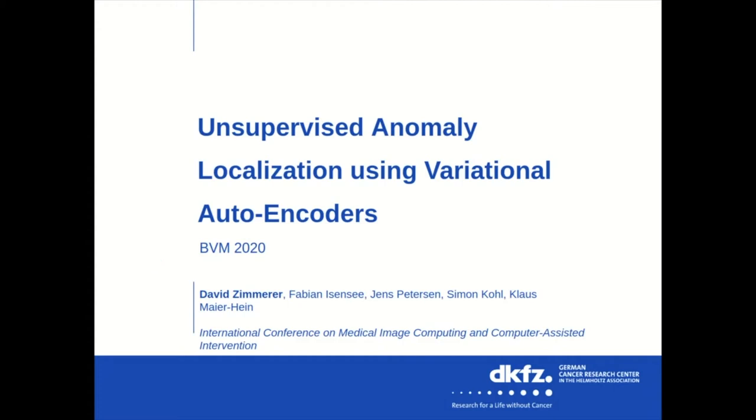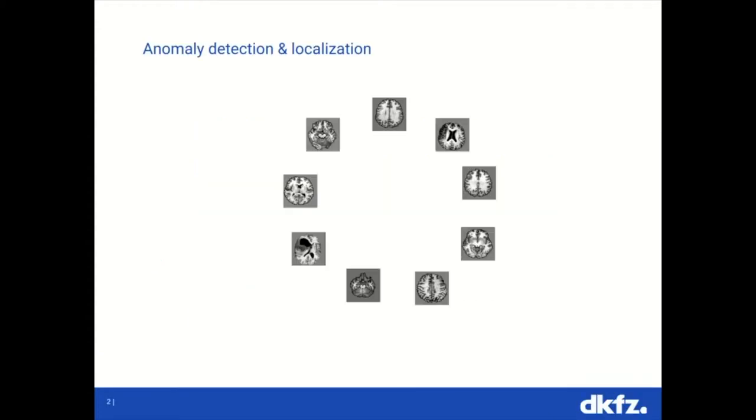Let's start with what anomaly localization and detection is. For anomaly detection, basically given a lot of healthy samples, we want to detect samples which deviate from those, which are abnormal or have anomalies. In this case we have three examples: one with tumor, one with a stroke, and one with various lesions.